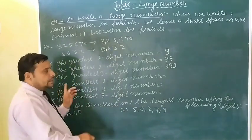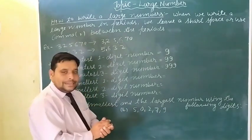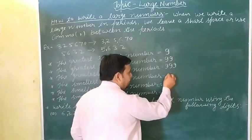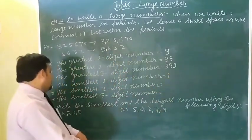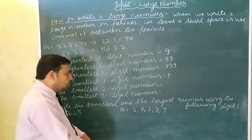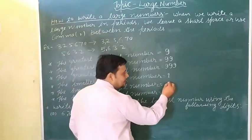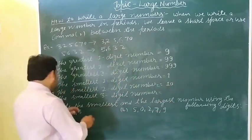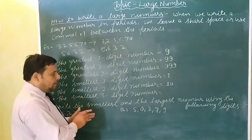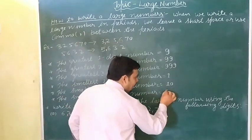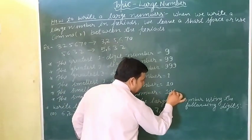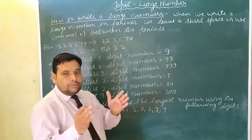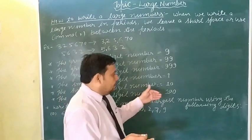The smallest one digit number is one. The smallest two digit number is ten. The smallest three digit number is one hundred.